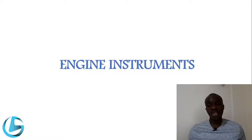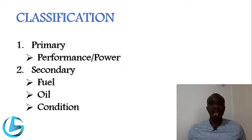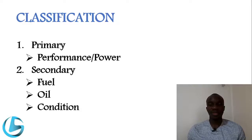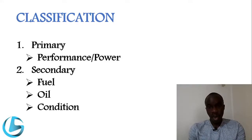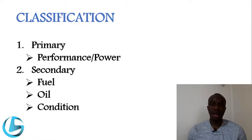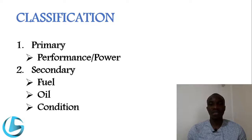The instruments of an aircraft engine are classified into two main categories. One is the primary and two is the secondary. The primary engine instruments are those used to show the performance of an aircraft engine — the power that an engine is producing, among other major parameters. The secondary engine instruments show systems associated with an engine, particularly the fuel system and the oil system, as well as other condition parameters of an engine.